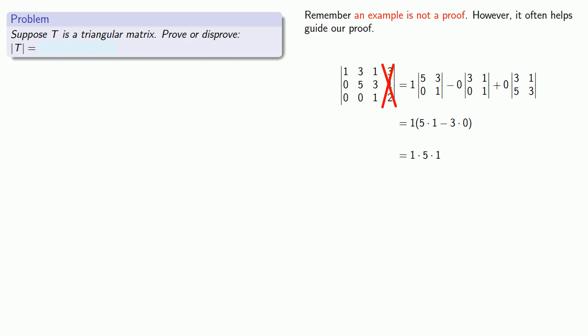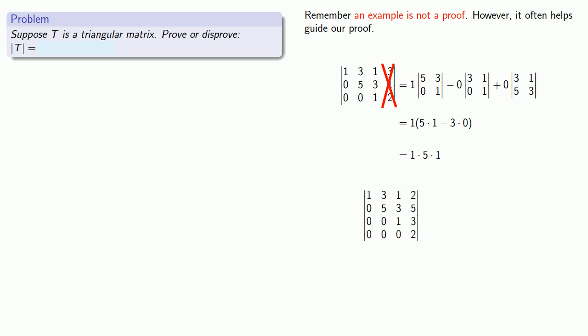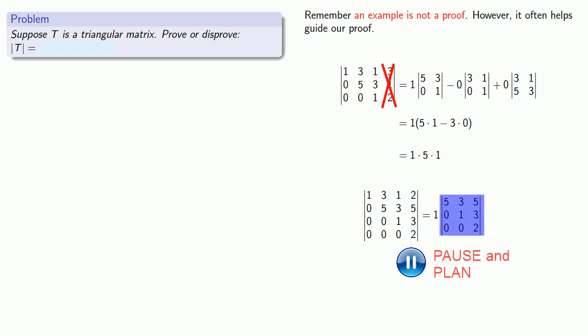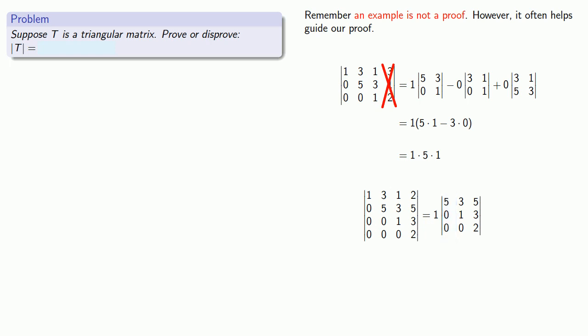What if I have a 4 by 4 triangular matrix? As before, because the first column has mostly zeros in it, I'll choose to expand along that first column. So the determinant is going to be 1 times the minor. We can then find the determinant of that minor matrix — again, it's easiest to expand along its first column because it's mostly zeros. We won't do the arithmetic, but we'll write down what we would be doing. The determinant is going to be 1 times 5 times 1 times 2.